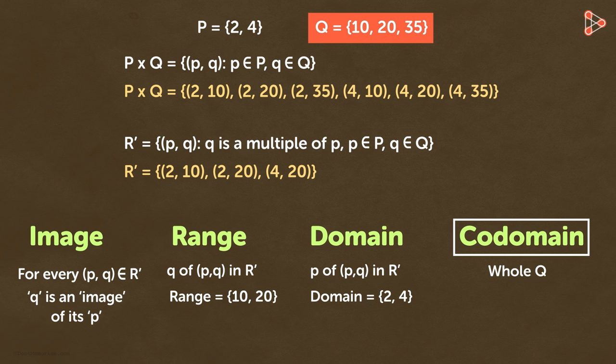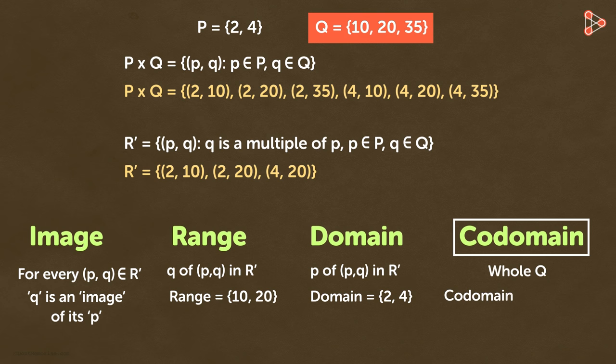What is the co-domain here? The whole set Q is called the co-domain of relation R. So the co-domain here will contain the elements 10, 20 and 35.